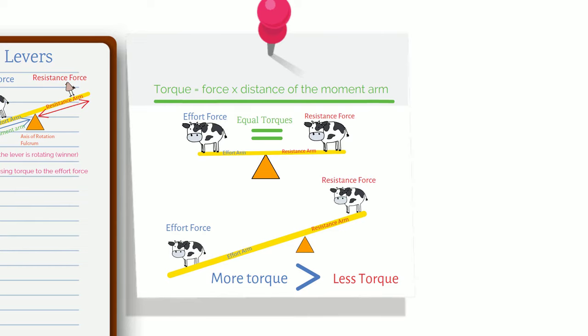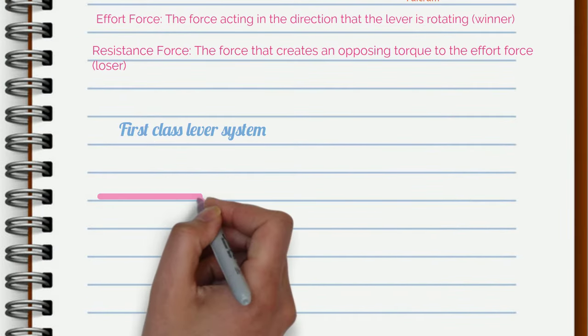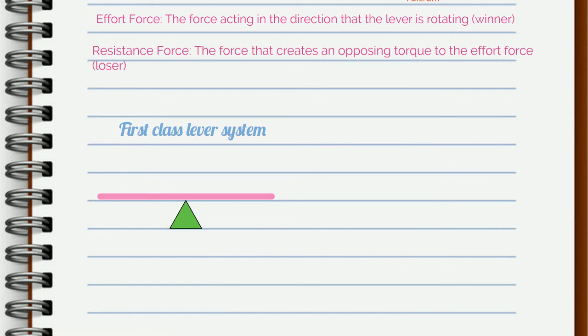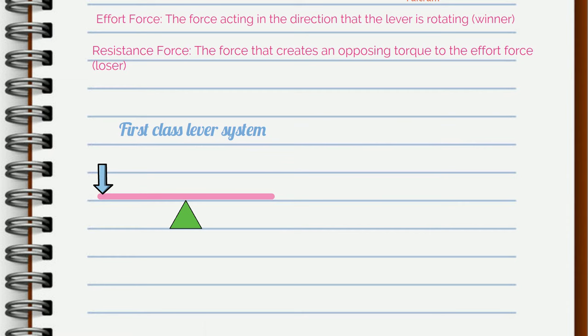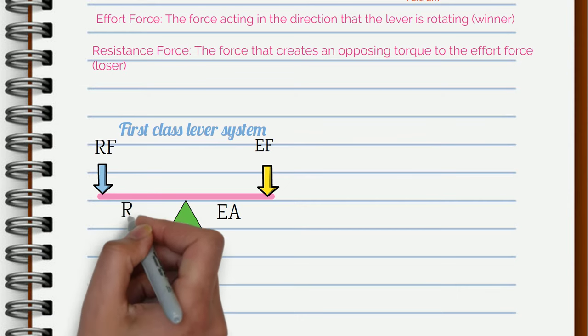Let's take a look at the first class lever system. A classic example is a seesaw. Here, the axis of rotation is positioned between the two opposing forces. On one side there is an effort force and an effort arm and at the opposite side there is a resistance force and a resistance arm.